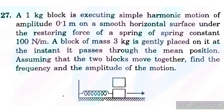SC Verma Simple Harmonic Motion Numerical 27. A 1 kg block is executing simple harmonic motion of amplitude 0.1 meter on a smooth horizontal surface under the restoring force of a spring of spring constant 100 N/m. A block of mass 3 kg is gently placed on it at the instant it passes through the mean position. Assuming that the two blocks move together, find the frequency and amplitude of motion.